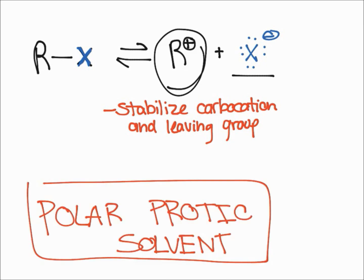And so in order to do this, we're going to need a polar protic solvent, such as water or alcohol. And it's important to remember the solvent is often also the nucleophile. And so polar protic solvents are going to be very good at stabilizing the carbocation and the leaving group. And therefore is going to be the best solvent for an SN1 reaction.